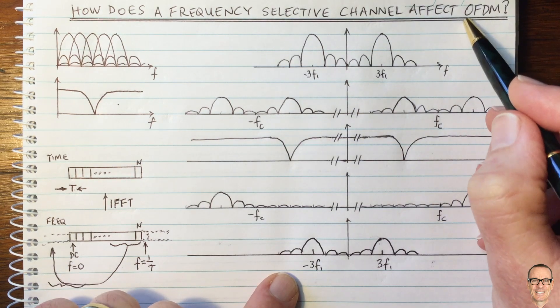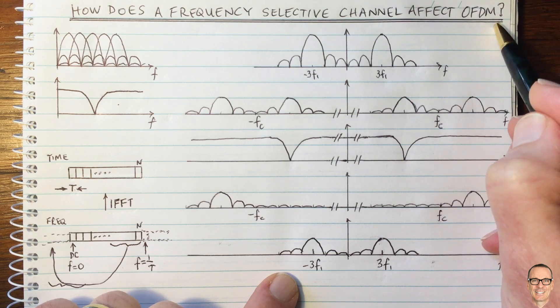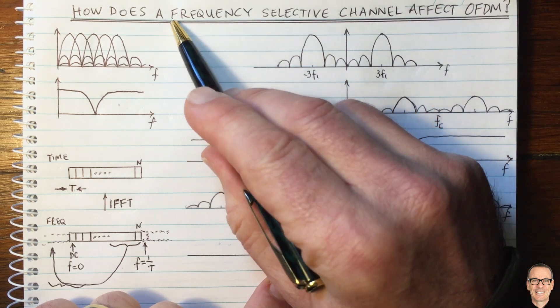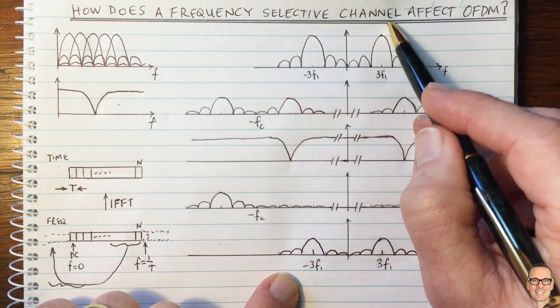So hopefully this has given more insights into the actual transmission of OFDM and the effect of notches in the frequency selective channel.